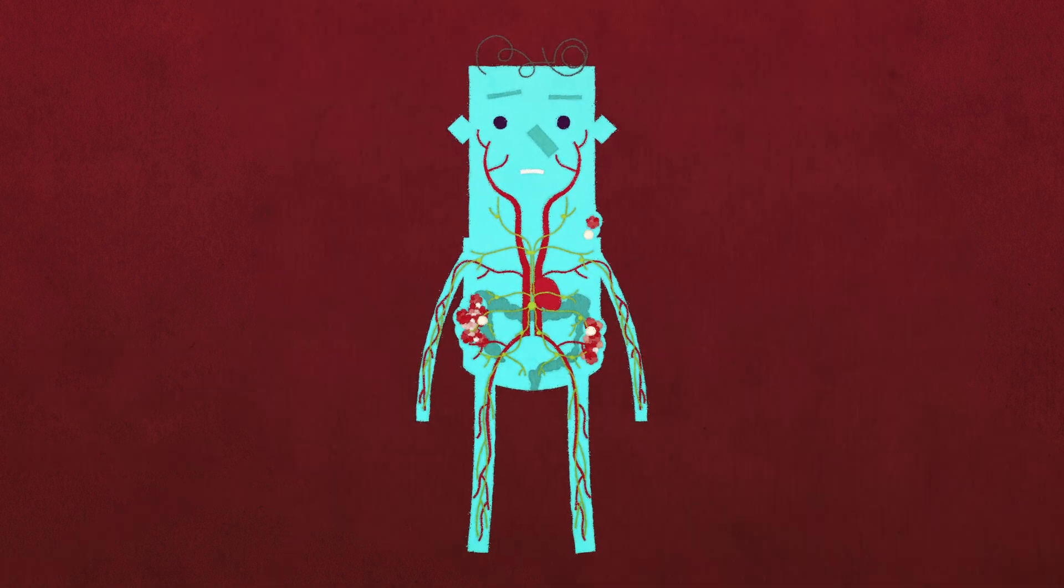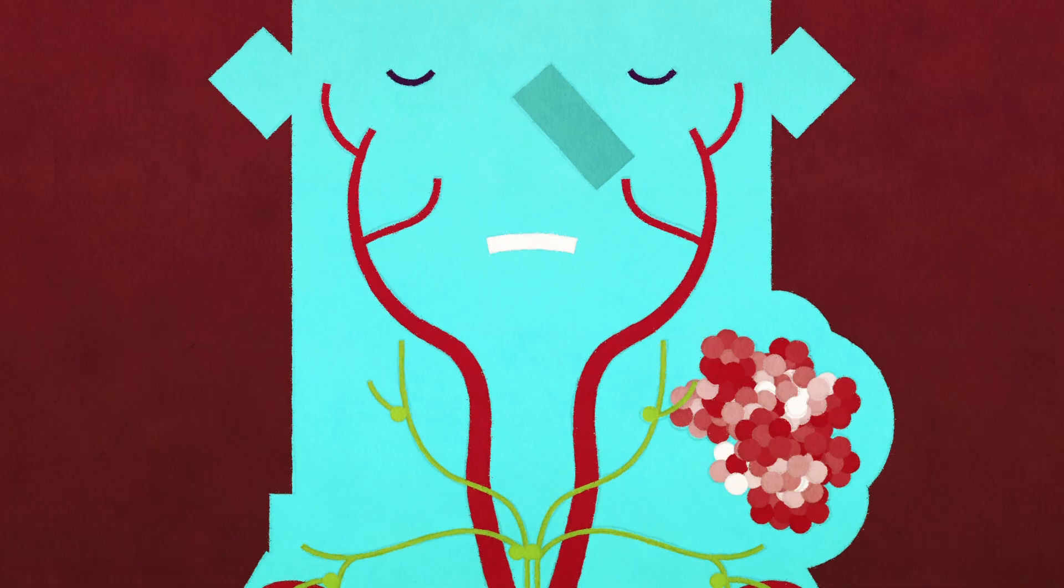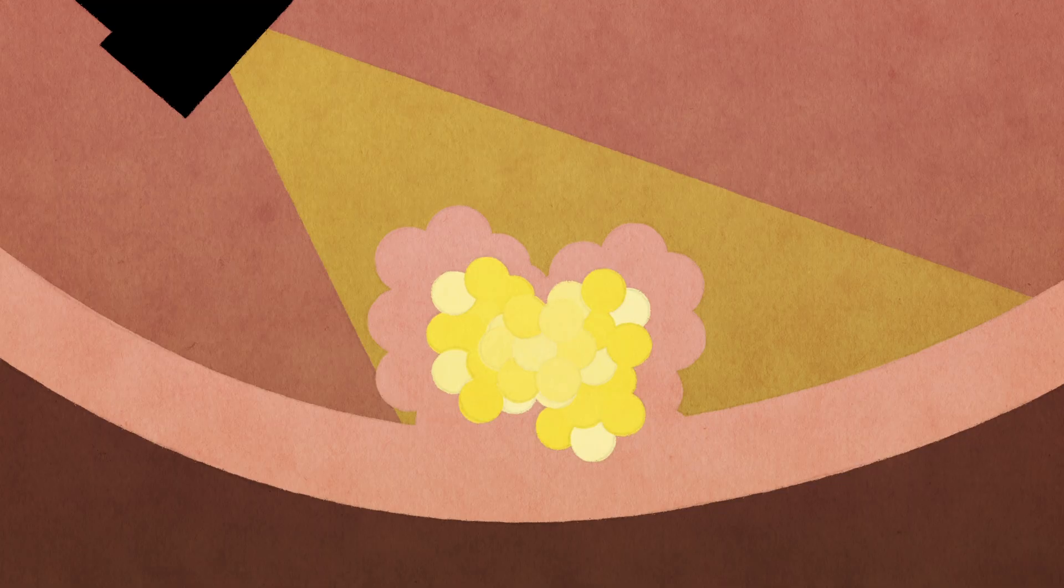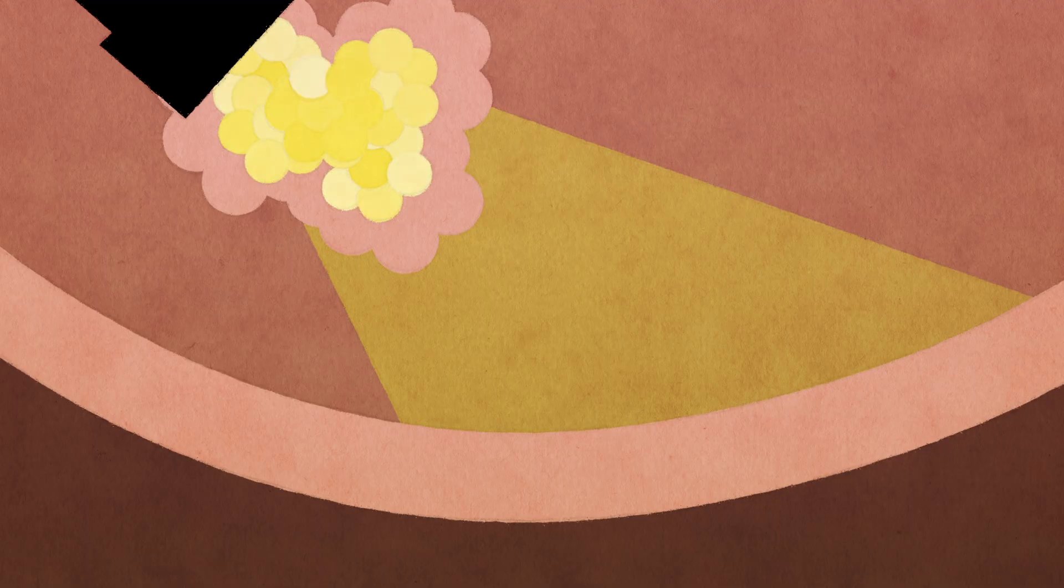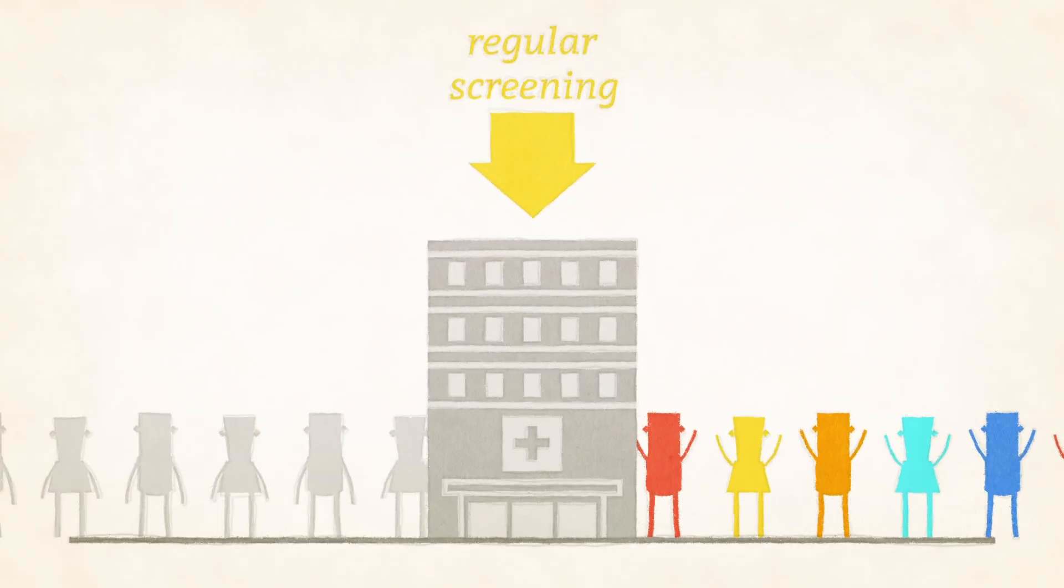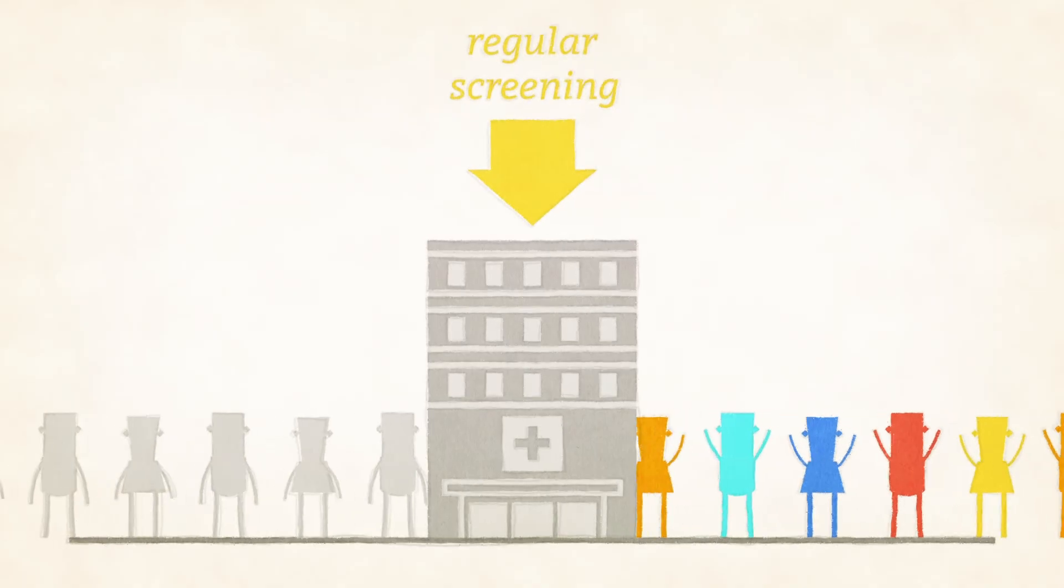Despite these challenges, there's a solution. We've become extremely good at detecting and removing offending polyps before they can cause cancer. This happens through a process called screening, and when we do it regularly, we can prevent many cases of colon cancer.